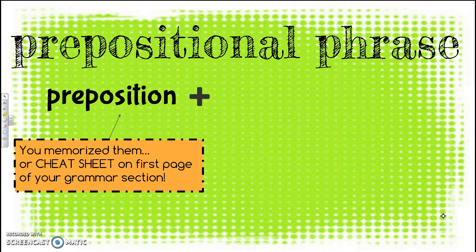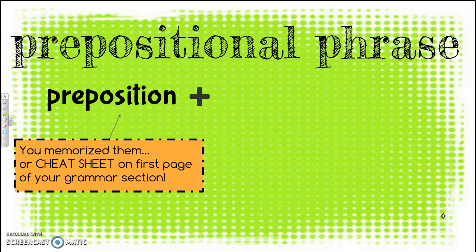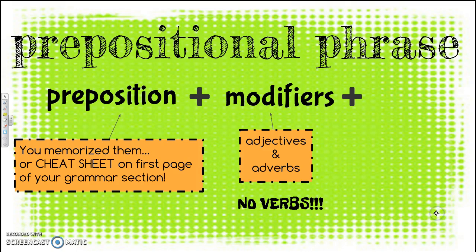After a preposition, you're allowed to have modifiers. Some of our modifiers are adjectives and adverbs — words that describe. The big thing to remember is that you are absolutely not allowed to have verbs. You are not allowed to have a verb in a prepositional phrase. So the formula is: preposition plus modifier plus a noun — and sometimes that could be a pronoun — but a noun is a person, place, thing, or idea.